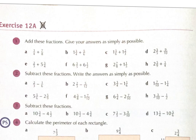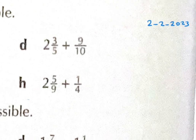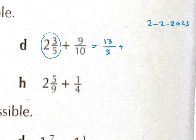Now it's time to practice. For number 1, solve D and H. Student Nurhan works on D: 2 and 3 over 5 converts to 13 over 5. Then 13 over 5 plus 9 over 10.